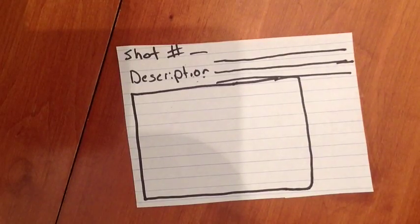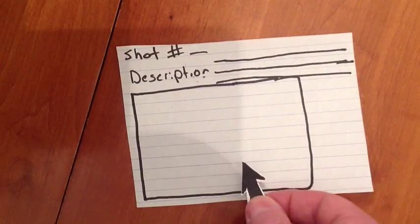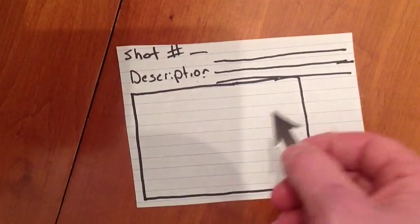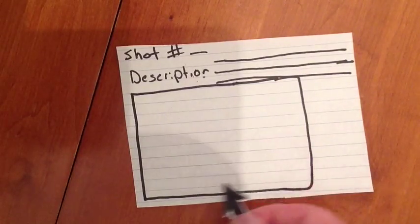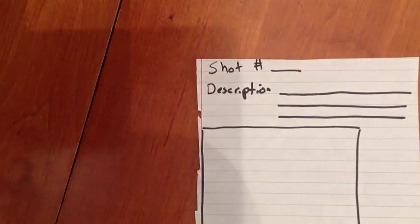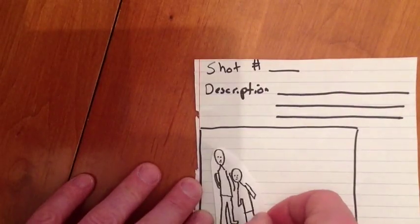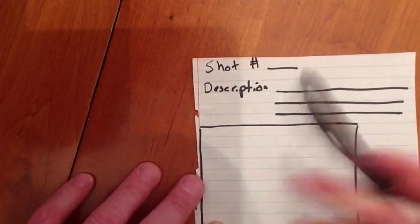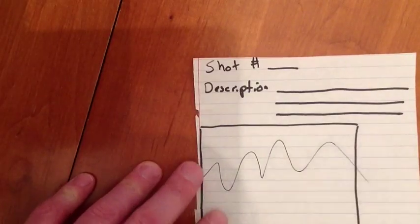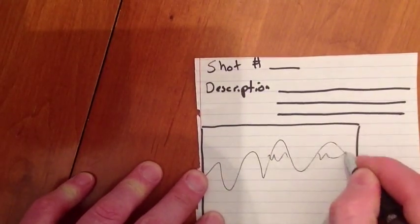Remember when you're making your storyboard you want to keep it simple. Have your characters and explain the action that is going on within the frame. So for example you could have your characters in the foreground. You may even choose to draw in your background, some snowy mountains.